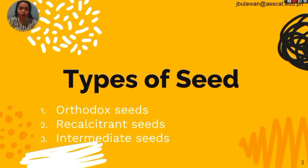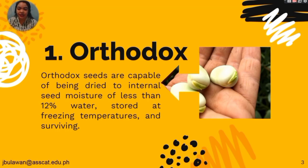There are three types of seeds, which are orthodox, recalcitrant, and intermediate seeds. So what are orthodox seeds? Orthodox seeds are capable of being dried to an internal seed moisture of less than 12% water, stored at freezing temperatures, and surviving. So it needs to be stored in a cold, dry place, and also at a low moisture content, which is lesser than 20% of moisture. Because when it exceeds that moisture content, it will disturb its dormancy and the seed starts to germinate.